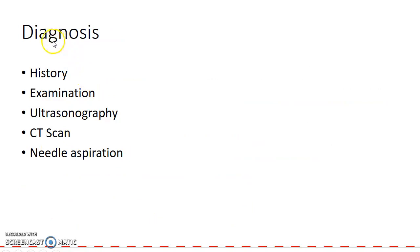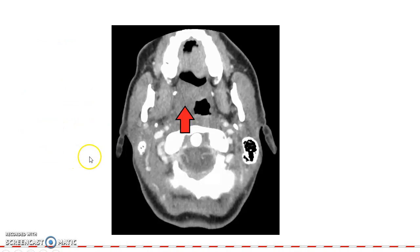How do you diagnose a case of peritonsillar abscess? Diagnosis can be made based on history and examination. Ultrasonography can be done, as well as CT scan and needle aspiration. This picture shows a patient with peritonsillar abscess as seen on CT scan.